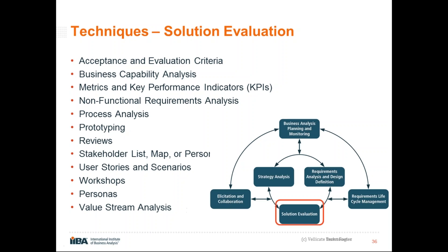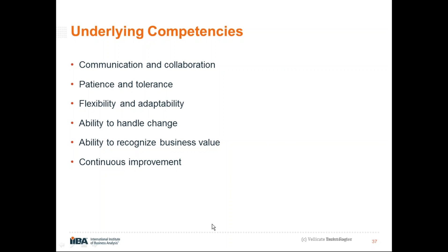All these tasks and techniques are available to be very successful on agile methodology projects. Especially important underlying competencies for agile include: communication and collaboration; patience and tolerance (a new underlying competency in BABOK 3); flexibility and adaptability (another new one); ability to handle change (new); ability to recognize business value (new); and continuous improvement (also new). These underlying competencies are very useful in the agile perspective.